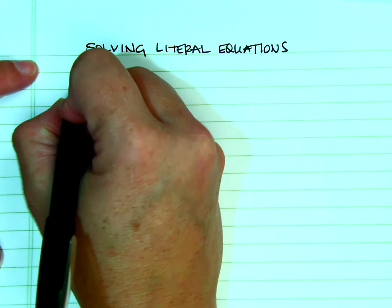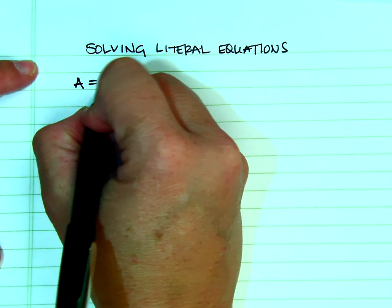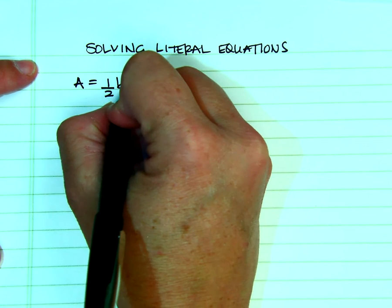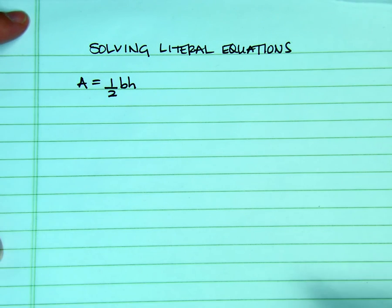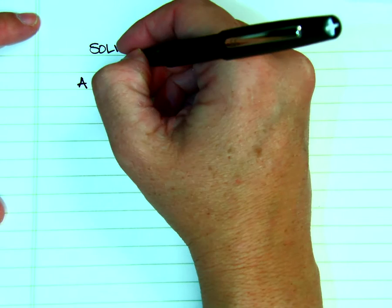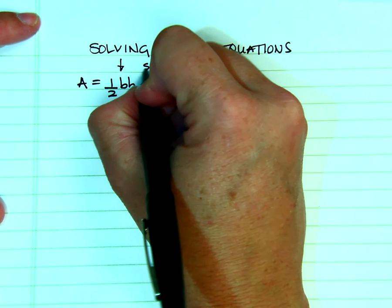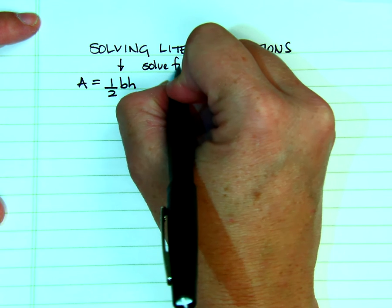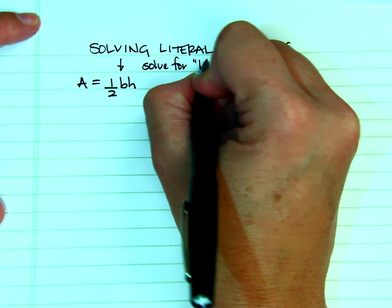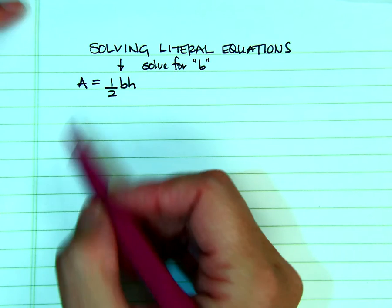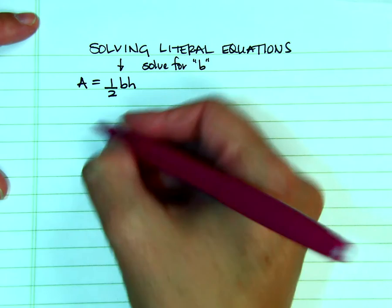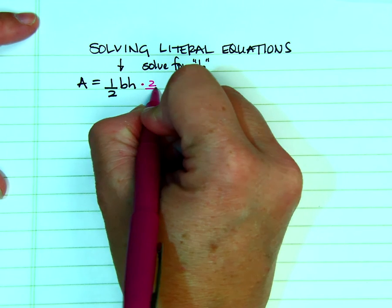So here is an example: area equals one half base times height. That is the formula for the area of a triangle. So if I want to solve for B, that means I am trying to get B all by itself. The first thing I notice here is I see this fraction. How do I get rid of the fraction? I can multiply both sides by the reciprocal.